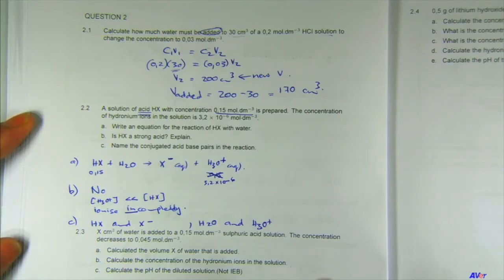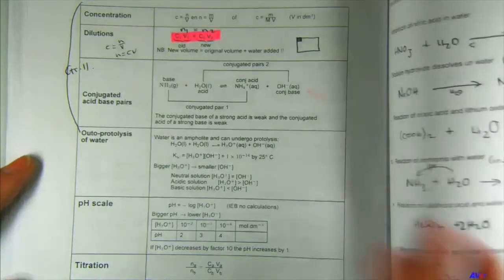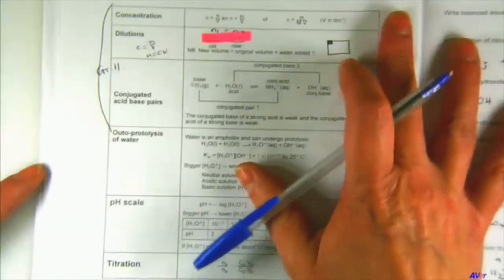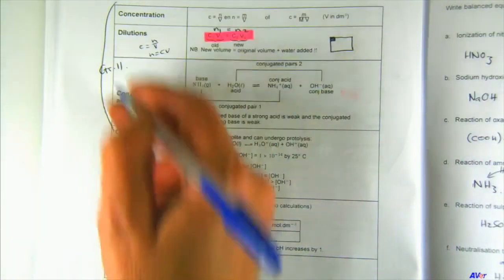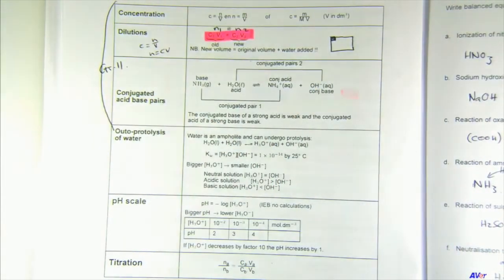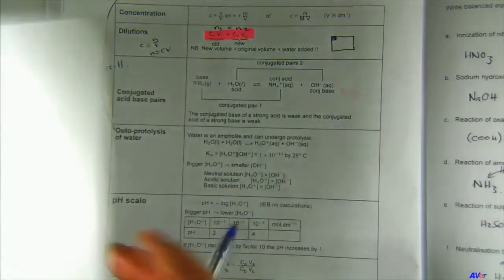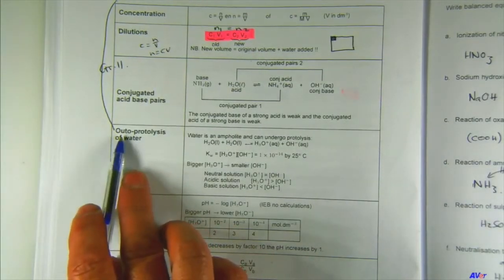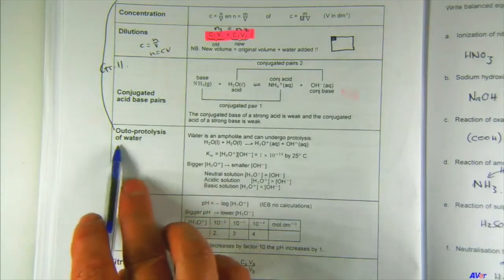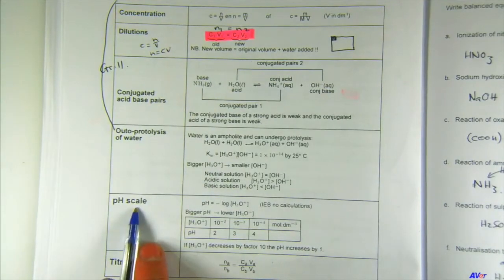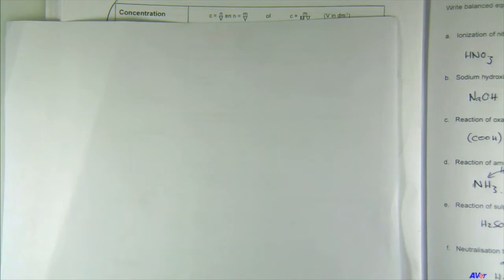That completes the grade 11 revision. Now we move on to grade 12 content. We're going to look at the autoprotolysis of water and the pH scale. Water is called an amphiprotic substance — can anyone tell me what that means?